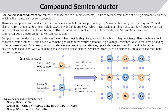Compound semiconductors used in devices have higher mobility, high-frequency performance, high switching efficiency than single-element semiconductors such as silicon. They also have a wide band gap, enabling high-temperature operation and high voltage resistance, due to the strong bonding force between atoms. As a result, compound devices are used in power devices, optical devices such as LEDs, and high-frequency devices.